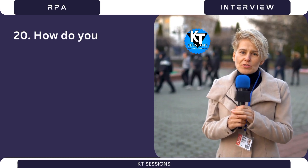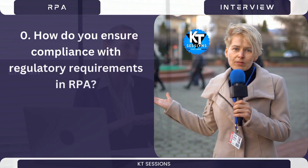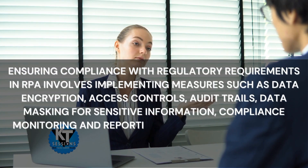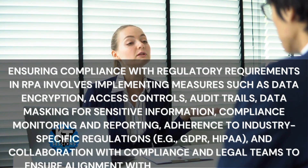Question 20: How do you ensure compliance with regulatory requirements in RPA? Ensuring compliance involves implementing measures such as data encryption, access controls, audit trails, data masking for sensitive information, compliance monitoring and reporting, adherence to industry-specific regulations such as GDPR and HIPAA, and collaboration with compliance and legal teams to ensure alignment with regulatory standards.